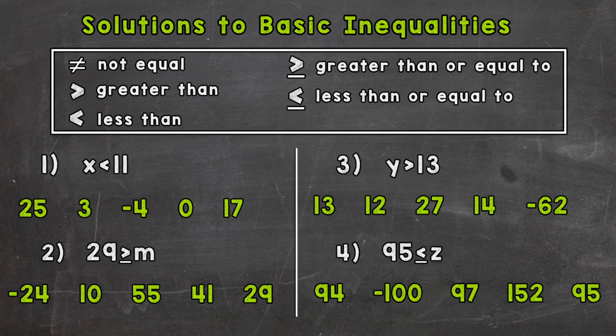The five symbols used to represent inequalities are: not equal, greater than, less than, greater than or equal to, and less than or equal to. You'll notice that the or equal to symbols have a small line under them. That signifies or equal to.